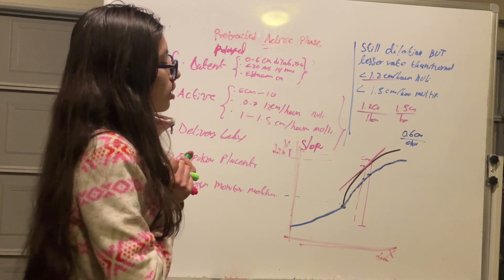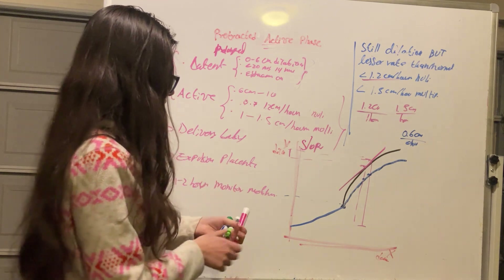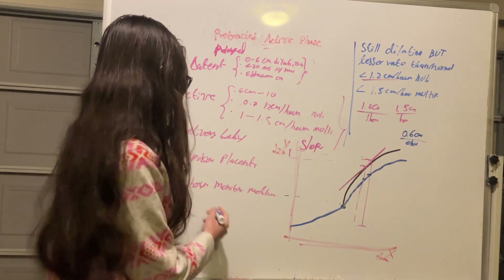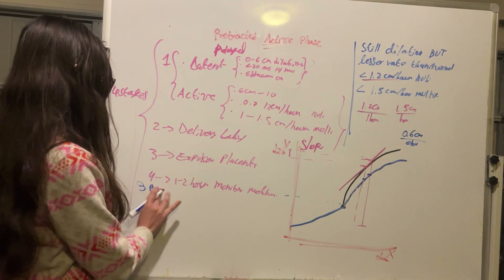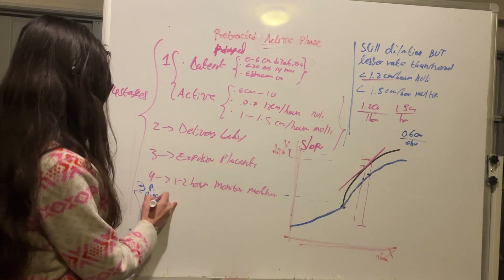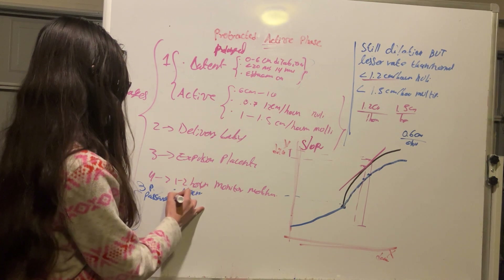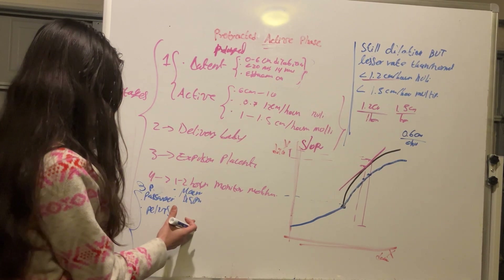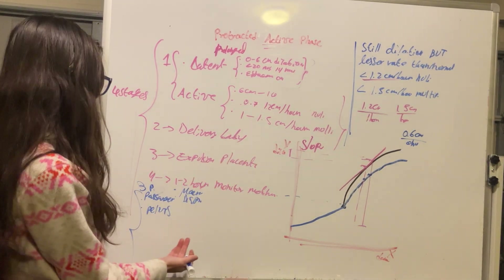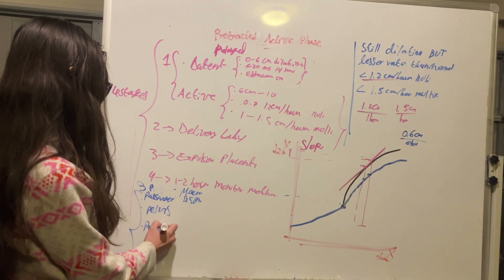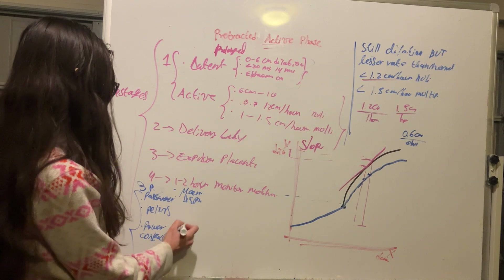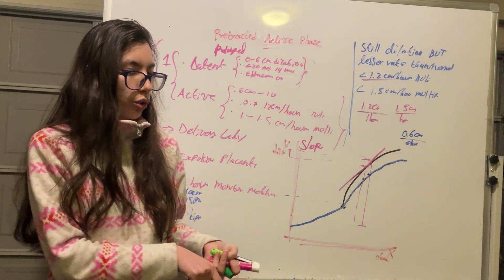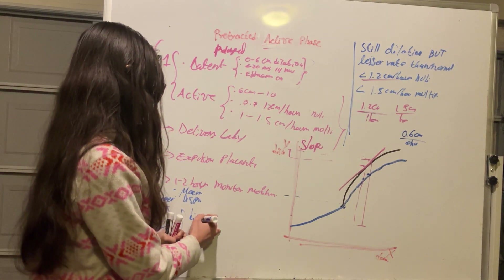Protracted active phase — still having dilation but at a lesser rate during the active phase — can be caused by the same etiologies as an arrest active phase, using the mnemonic of the three P's: passenger, pelvis, and power. An abnormality with the passenger (the baby) could be a macrosomic baby or fetal-pelvic disproportion. An abnormality of the pelvis means there is insufficient space for the baby to accommodate through the labor stages.